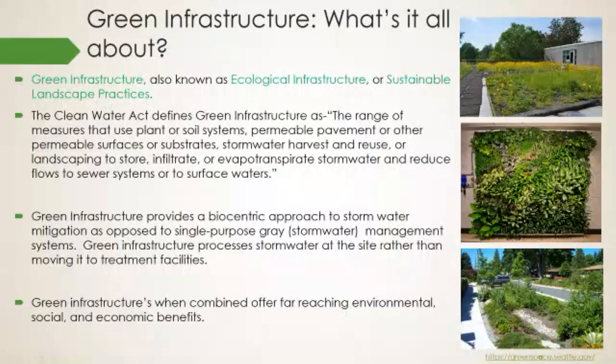To sum that up, green infrastructure offers a more natural, biological, or environmentally balanced approach to stormwater management and mitigation of stormwater runoff. This is an alternative to what's called single-purpose gray stormwater management systems, which include streets, drainage gutters, drainage culverts, and ultimately storm sewers. Some of this gray water is processed and treated for municipal water supplies, but other times it's directed toward open water bodies — rivers, lakes, even oceans — depending on the city's stormwater management systems.